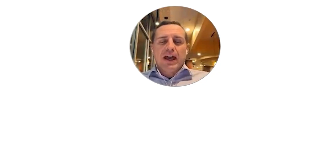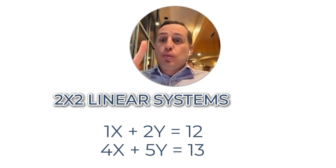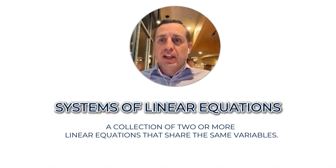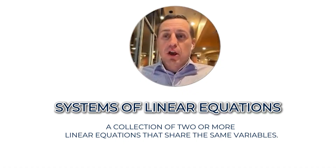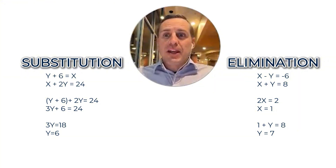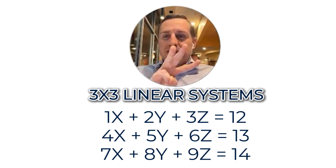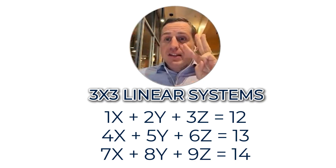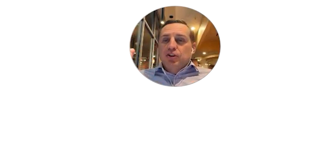Today we're taking a look at two-by-two application problems — systems of linear equations — which we solve by either substitution or elimination method. Then we'll look at three-by-three linear systems. Those three-by-three systems are going to be application problems as well. So these are all word problems and story problems.